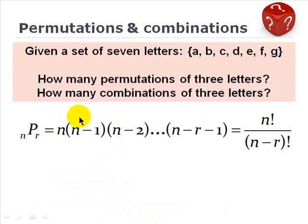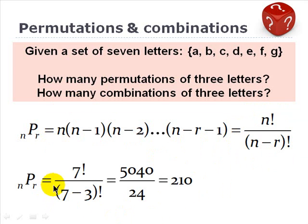So we can try an example here. Given a set of seven letters, a, b, c, d, e, f, g, we can ask how many permutations of three letters and how many combinations of three letters. For permutations, this is the formula. And the answer would be 7 factorial because we have seven letters divided by seven minus three because we're drawing three letters. And so that's 5,040 divided by 24 or 210 permutations of three letters out of a set of seven.